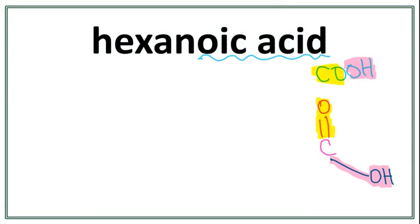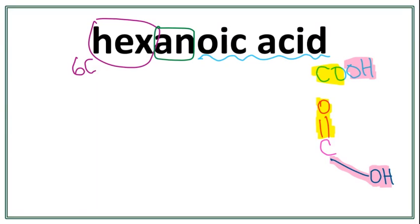Let's look at the parent chain. 'Hex' right here tells us that there are six carbons present in the longest carbon chain. This 'an' here tells us that this is an alkane, meaning that there are only single bonds between carbons in the parent chain. A trick to draw this is that you always count to one less than the number of carbons you want to draw.